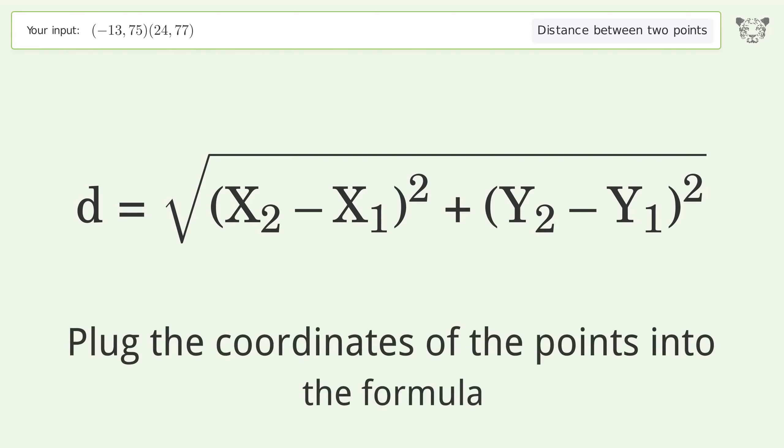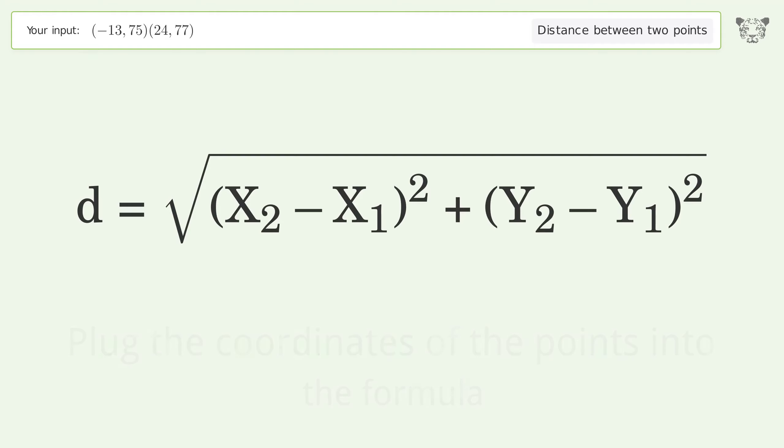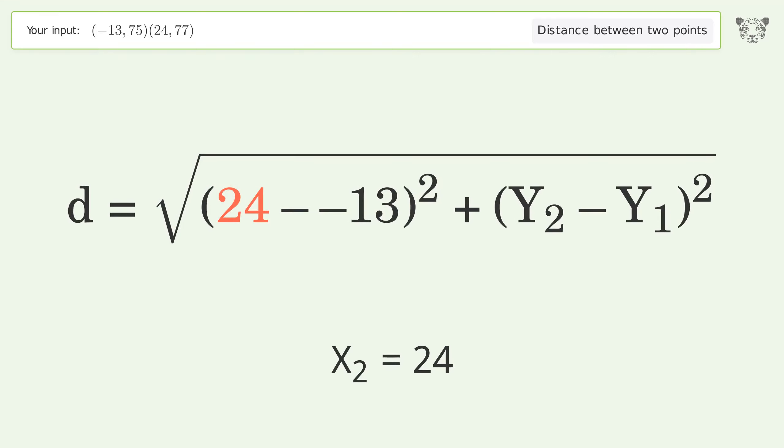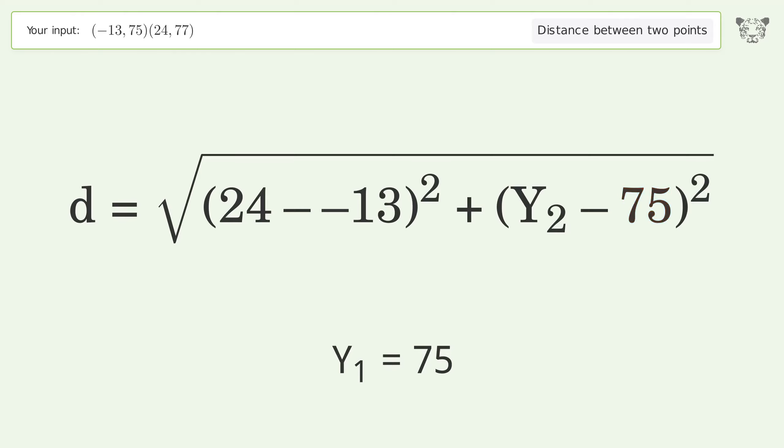Plug the coordinates of the points into the formula: x₁ equals negative 13, x₂ equals 24, y₁ equals 75, y₂ equals 77.